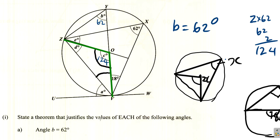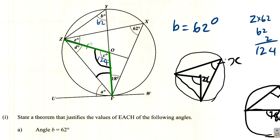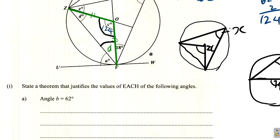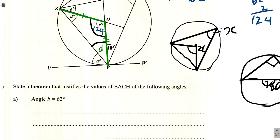Since ZO and VO are equal radii, triangle VOZ is isosceles. That means the two base angles are equal — if we call them both D, then angle OZV equals angle OVZ equals D.